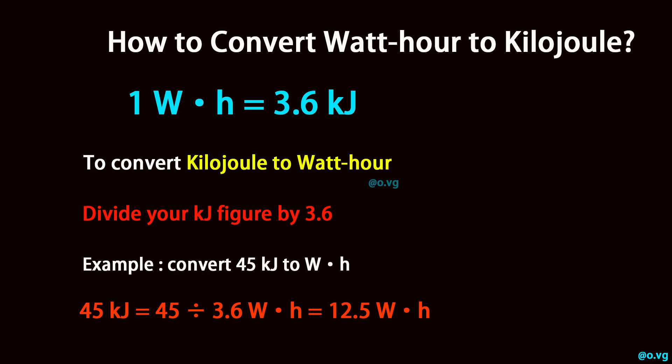Example: convert 45 kilojoule to watt-hour. 45 kilojoule equals 45 divided by 3.6 watt-hour, which equals 12.5 watt-hour.